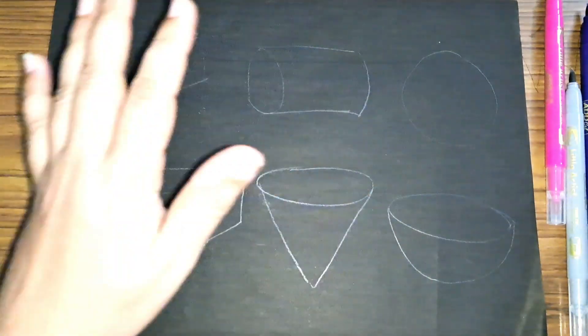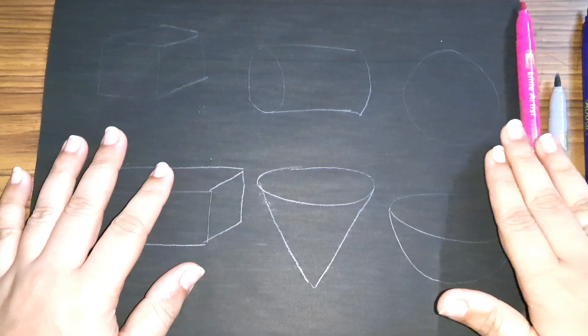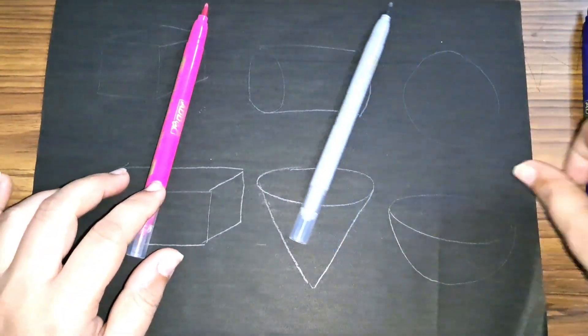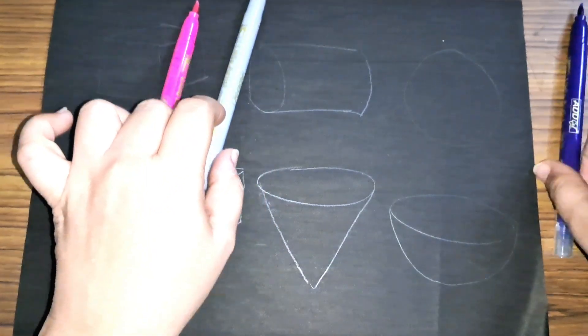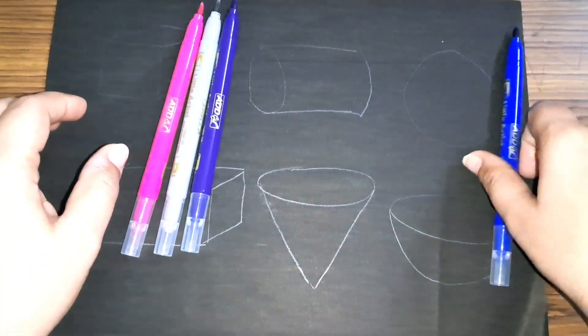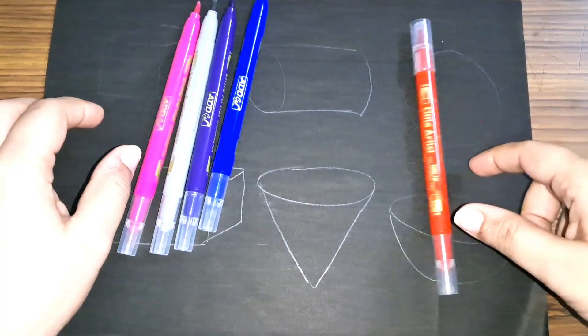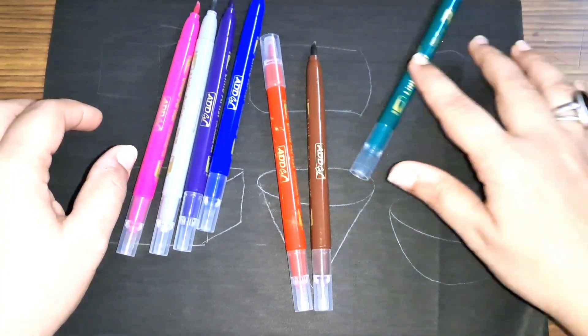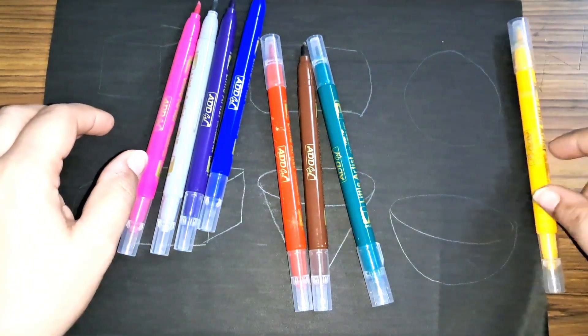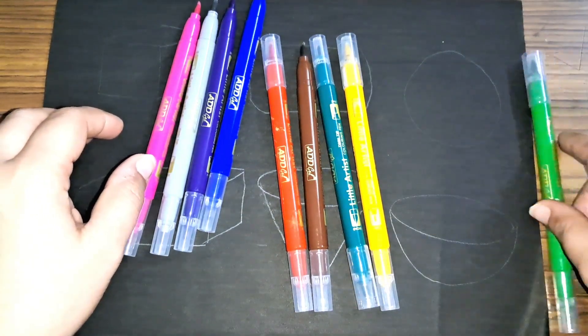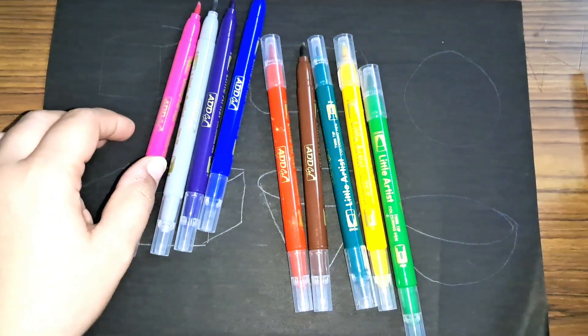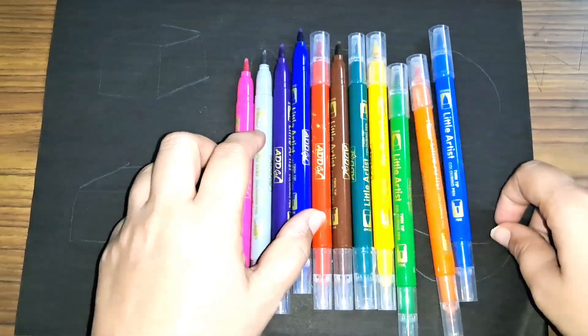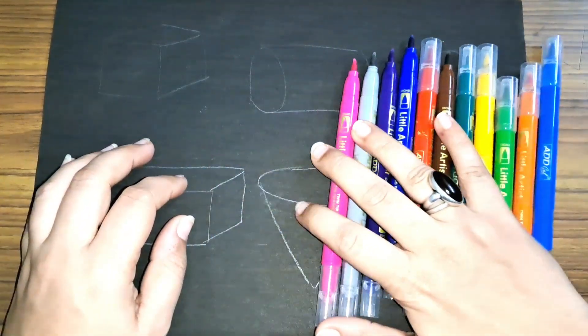Hey kids, let us learn some colors: pink color, gray color, purple color, dark blue color, red color, brown color, dark green color, yellow color, light green color, orange color, light blue color. Now let us learn some 3D shapes.